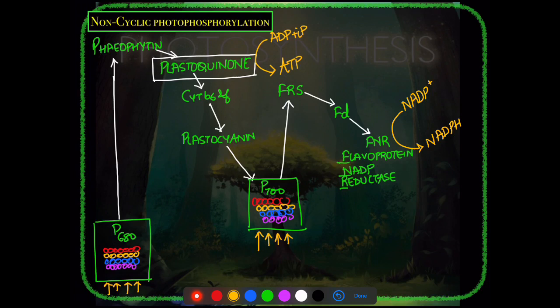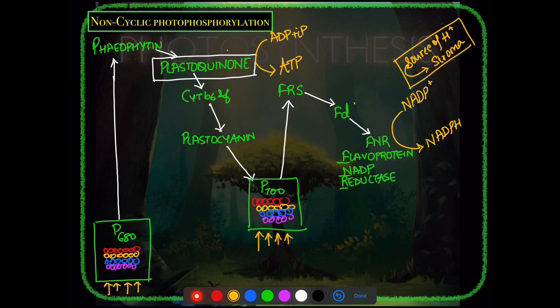The complete electron path in non-cyclic photophosphorylation: P680 → Pheophytin → Plastoquinone → Cytochrome B6/F → Plastocyanin → PS1 (P700) → FRS → FD → FNR → NADPH. The electron source is P680; the proton source for NADP+ reduction is the stroma. The NADPH formation occurs in the stroma, where PS1, NADP reductase, and related components are located.